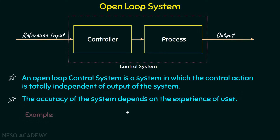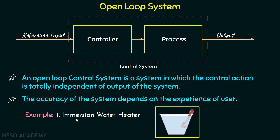To understand this, one classical example is an immersion water heater — that immersion rod that we put inside the water to heat it. It goes on heating the water but it doesn't have a feedback mechanism to tell you how hot the water is and when to stop heating the water. That's why it is a perfect example of an open loop system.